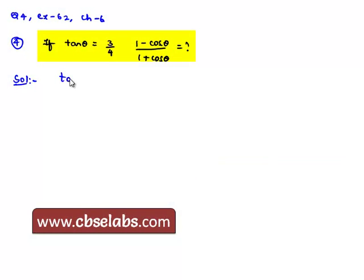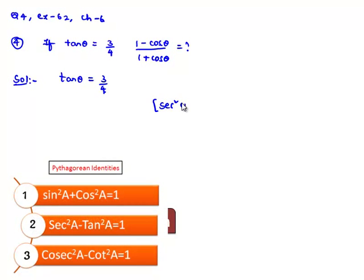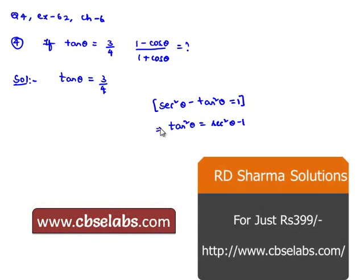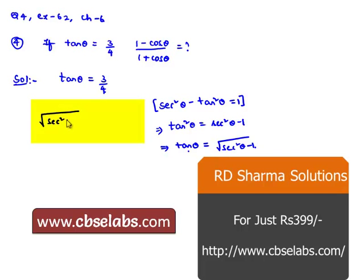We consider that tan θ is equal to 3 by 4. We use the identity sec²θ minus tan²θ equals 1, which gives us tan²θ equals sec²θ minus 1, and therefore tan θ equals the square root of (sec²θ minus 1). Substituting, we get the square root of (sec²θ minus 1) equal to 3 by 4.